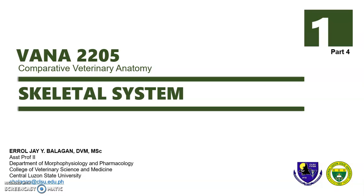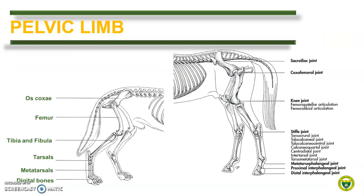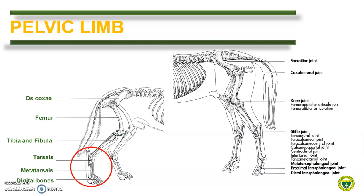After finishing the bones of the thoracic limb, let us now discuss the comparative features of the bones of the pelvic limb. The bones of the pelvic limb include the os coxae or the hip bone, the femur or the bone of the thigh, the tibia and fibula forming the bones of the leg, the tarsals, metatarsals, and digital bones. In contrast with the thoracic limb, there is a true joint joining the pelvic limb with the trunk, because of the sacroiliac joint between the sacrum and the ilium of the pelvic bone.